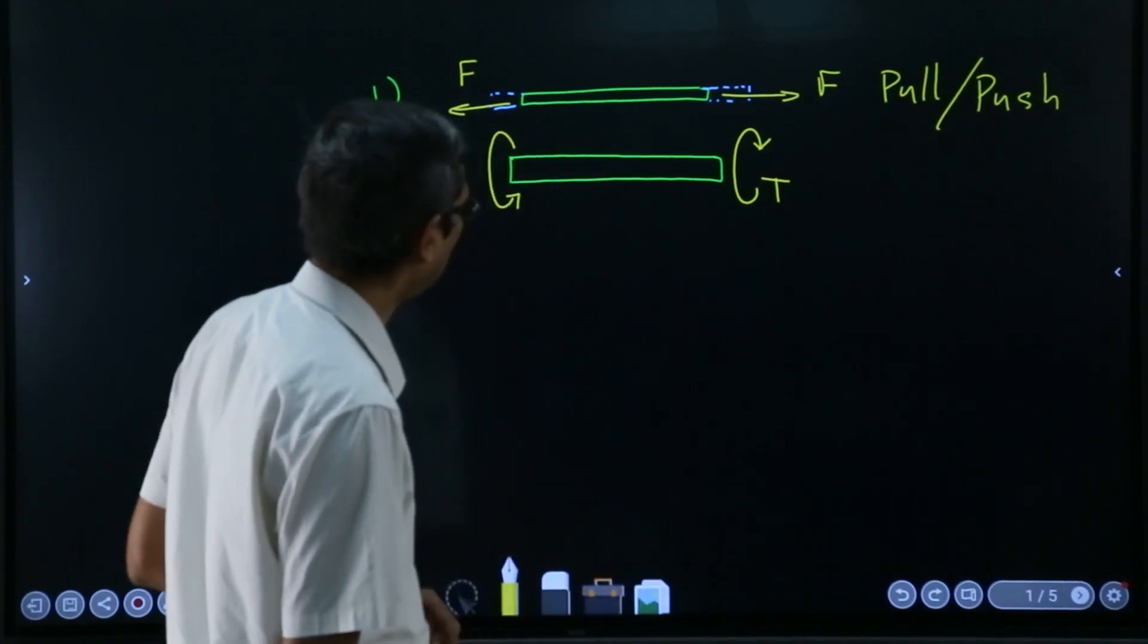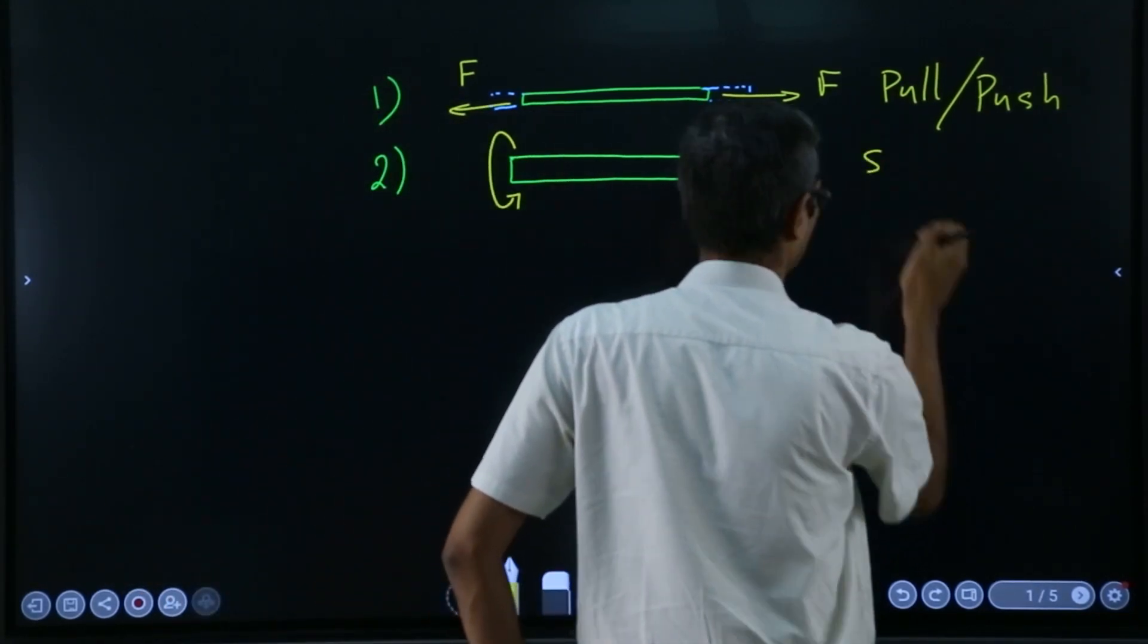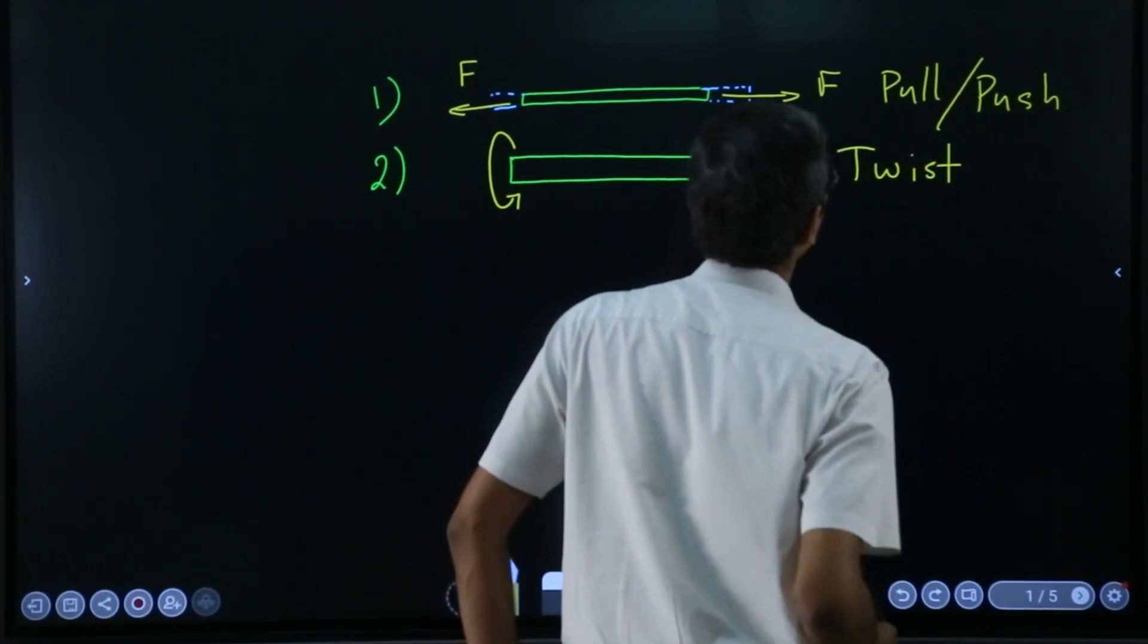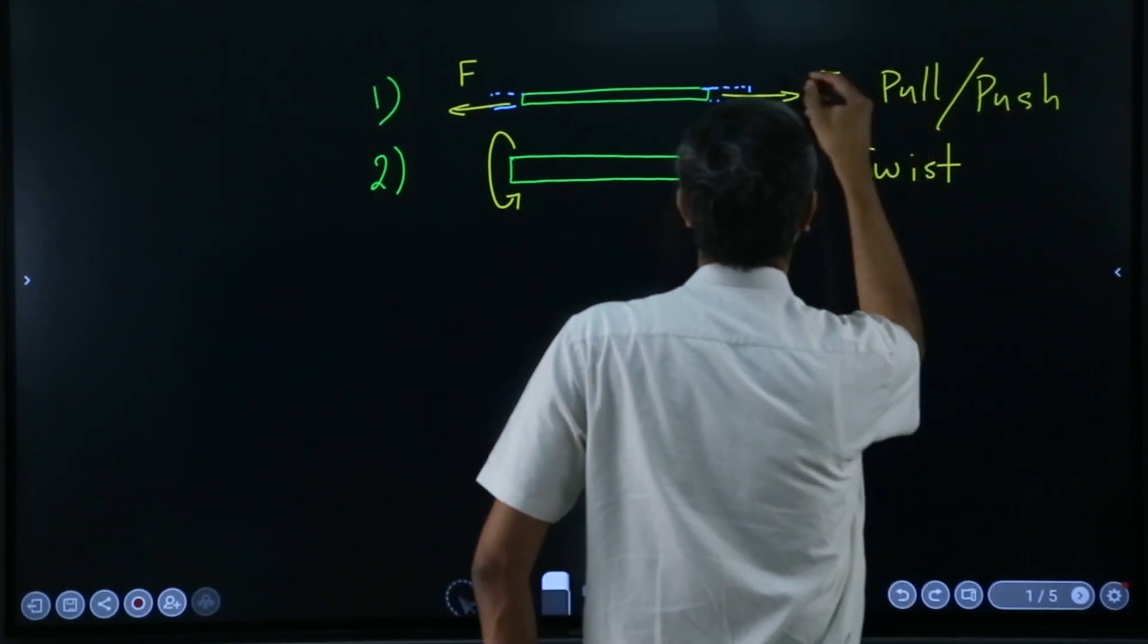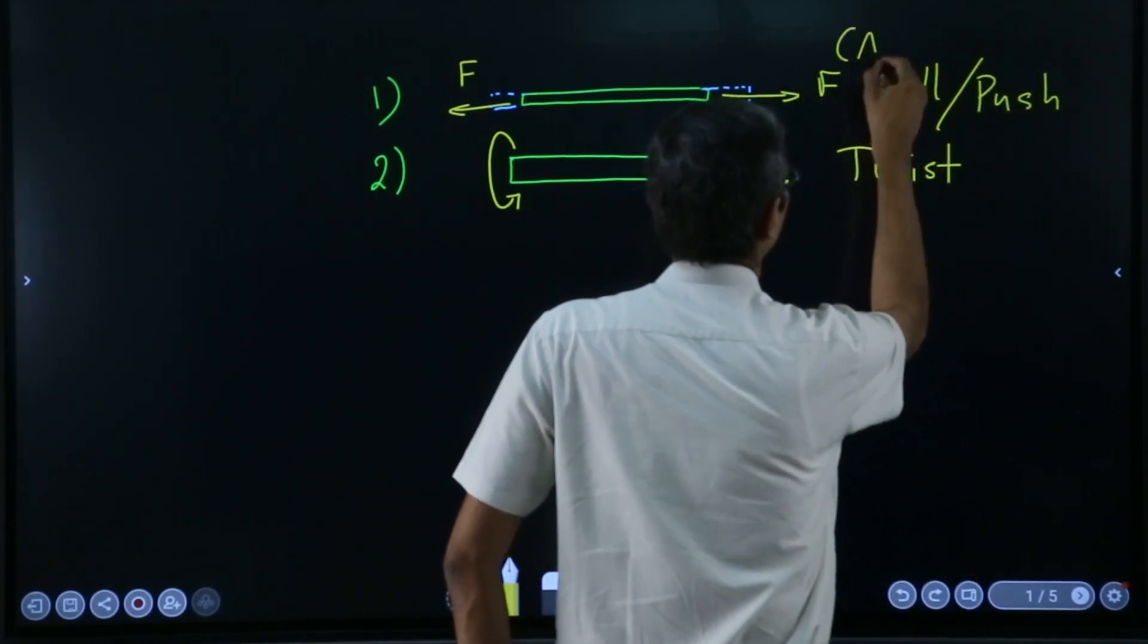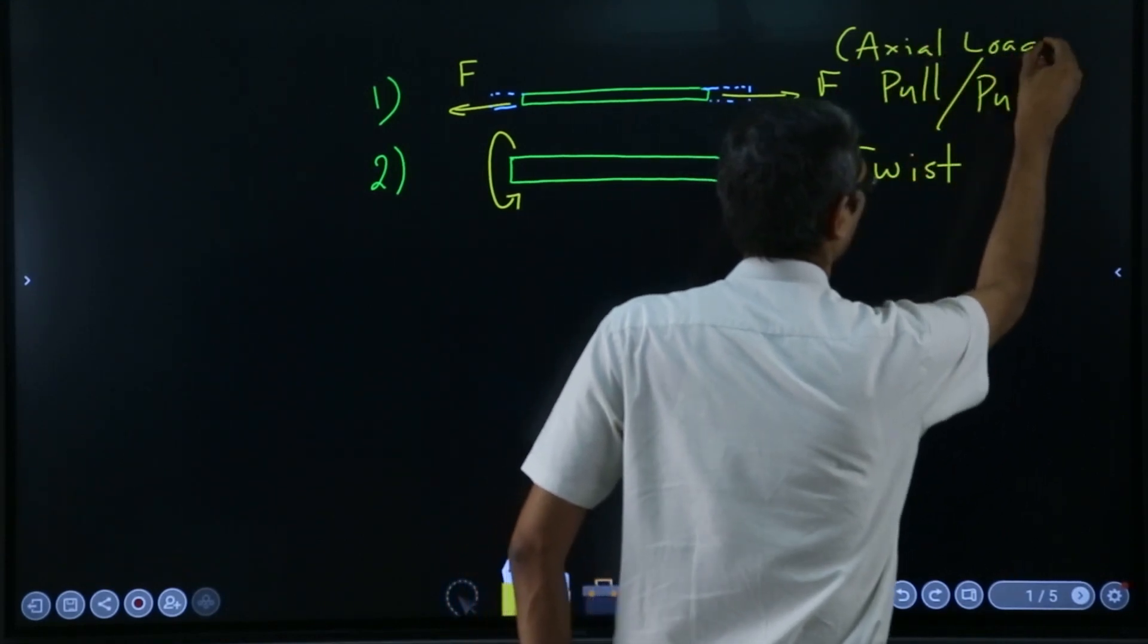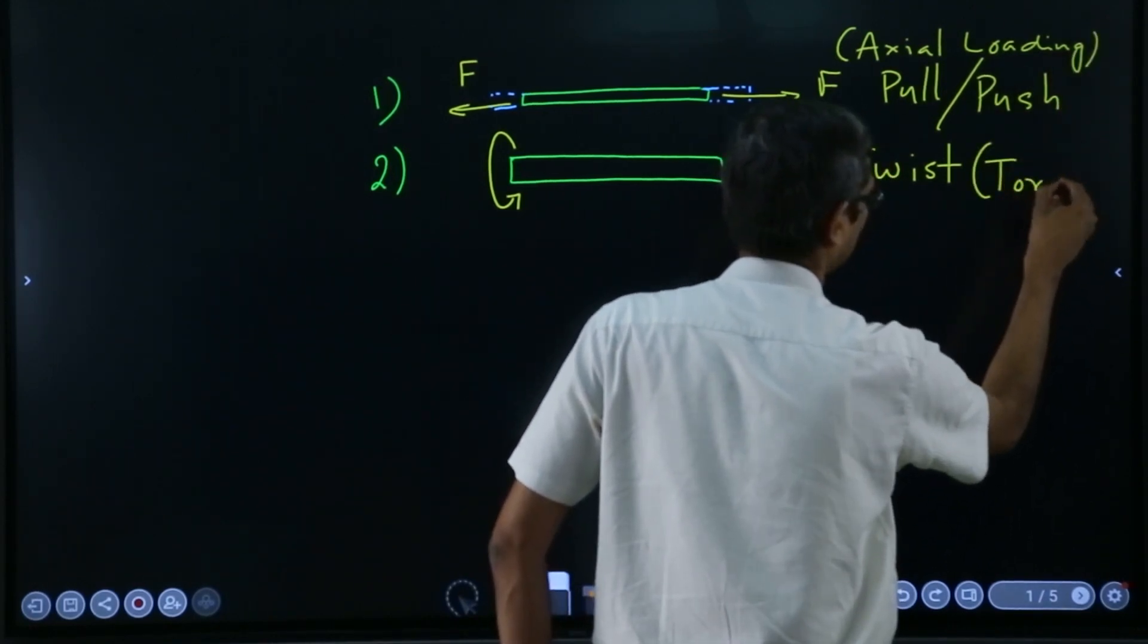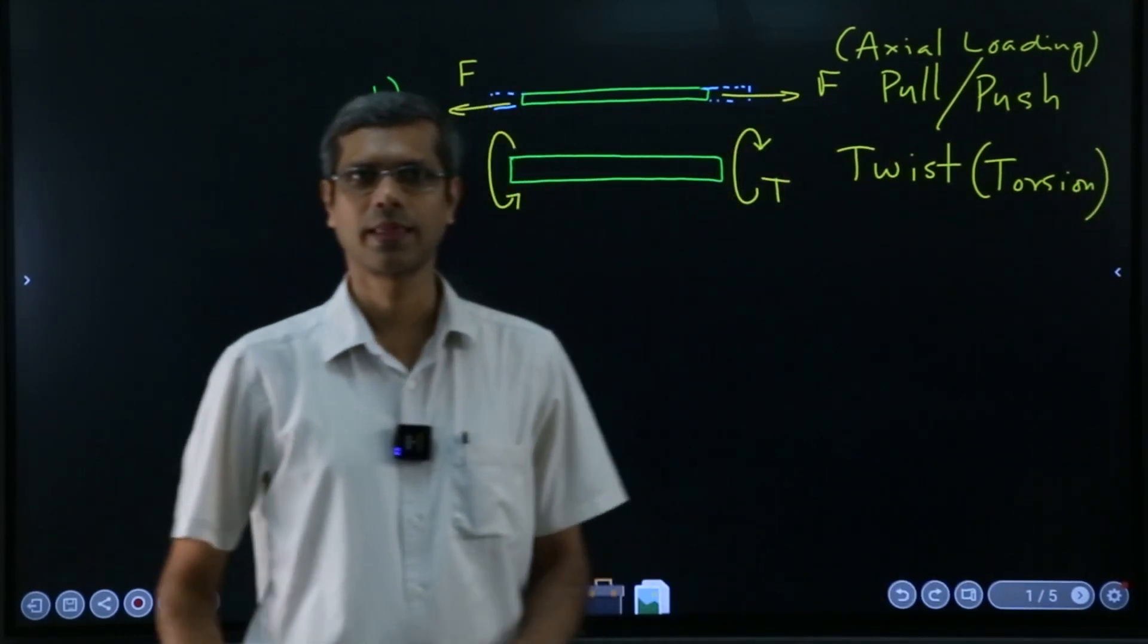This is the type of—if I say this is twist, the technical name in this case I will call this maybe axial loading, and in this case the technical term will be torsion.